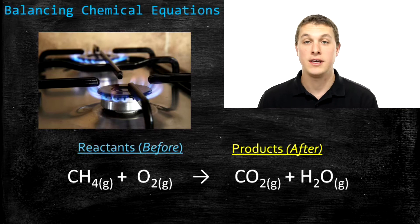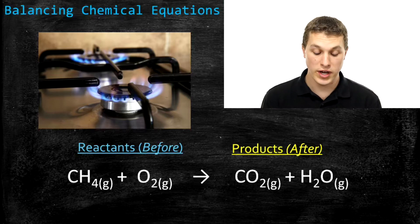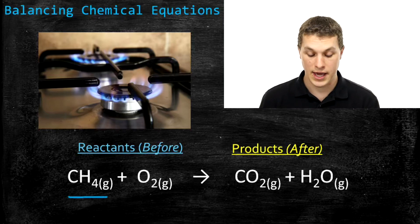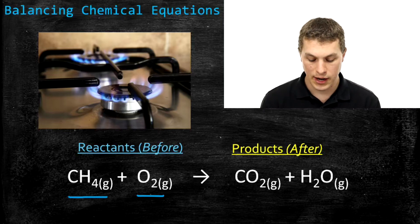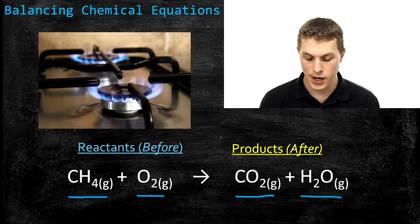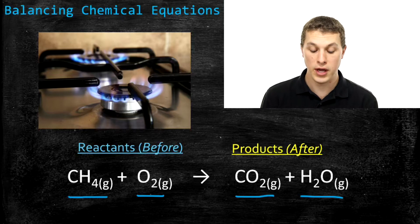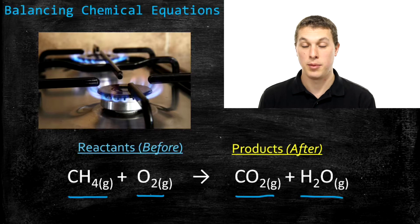Below you see a stovetop that's on, and a flame is coming out of it. That flame turns out to come from the burning of natural gas. A chemical equation we can write down for the burning of natural gas is listed below. You take methane, or natural gas, and combine it with oxygen. When you mix those two things together, you get out a bunch of heat that we cook our food with, and you also get out carbon dioxide and water.